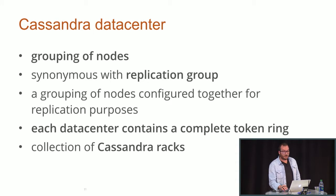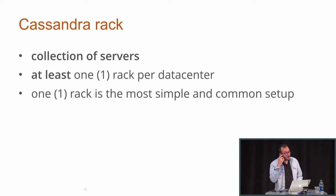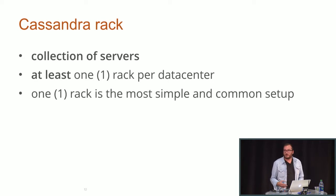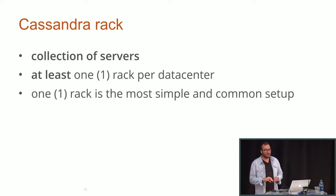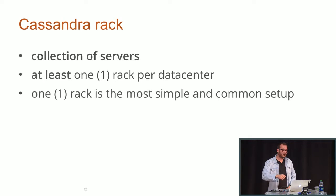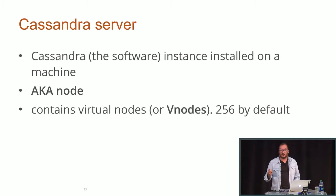A data center has a collection of racks. A rack is just a collection of servers. The most common use case is people using one rack per data center. For cloud deployments you don't really have to worry about it because your cloud provider takes care of resiliency. But for physical hardware this is important — it lets you specify physically where machines are and Cassandra will place replicas optimally so that if one rack goes offline you'll be in less trouble.